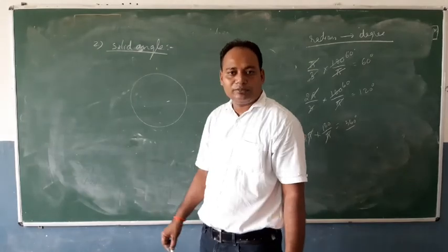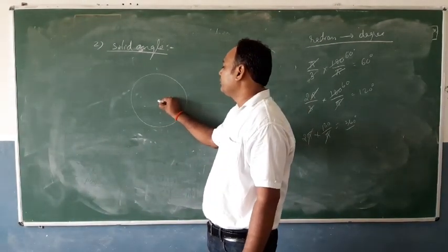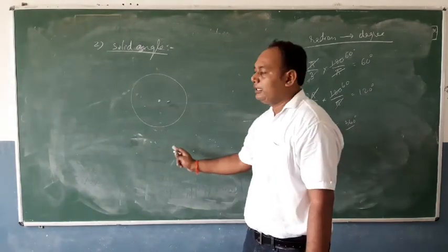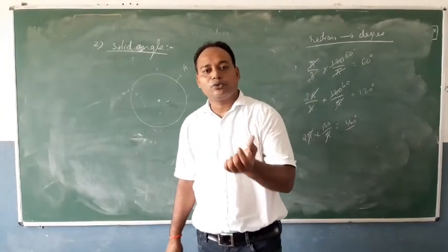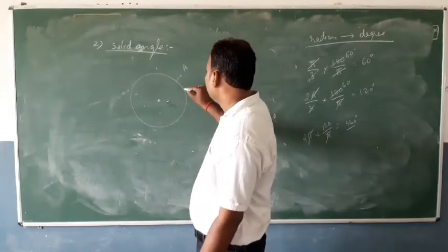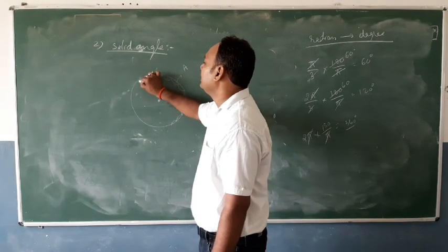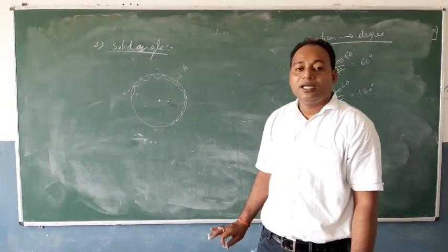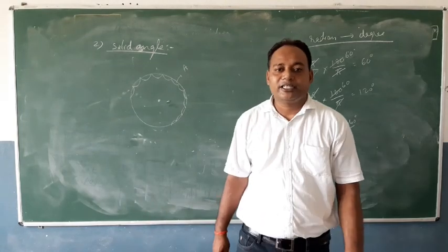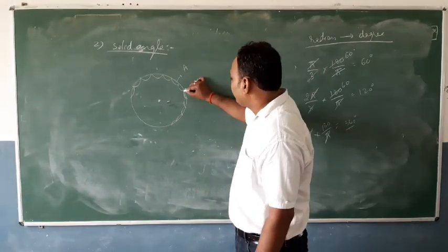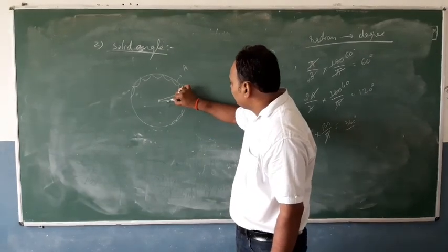Coming to the solid angle: suppose you have a sphere like a football. Imagine you are sitting at the center of that football. The football has a total surface area, and it has various spots — like the black and white patches on a football. Think of a torch being shone from the center outward onto a small area of the surface.